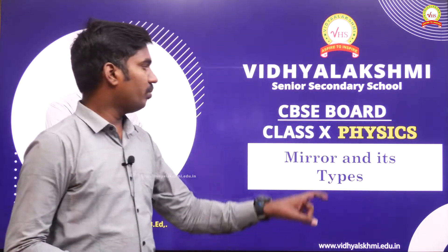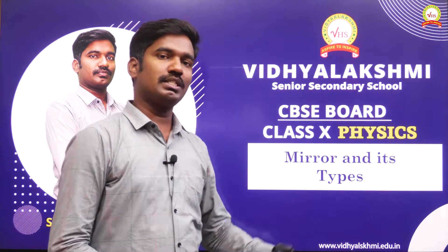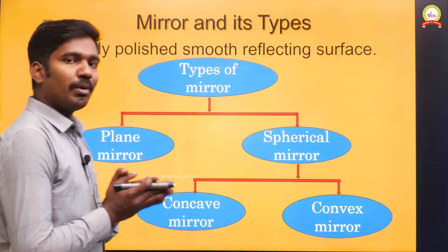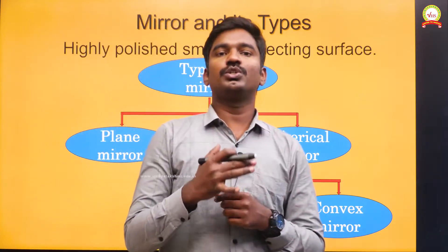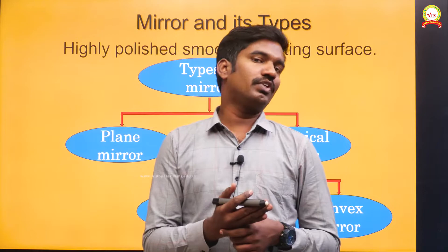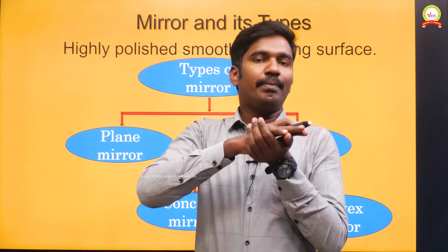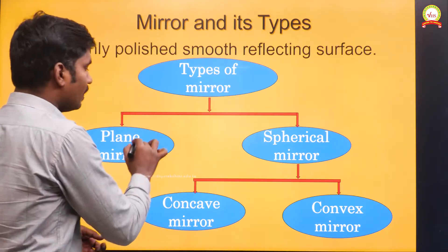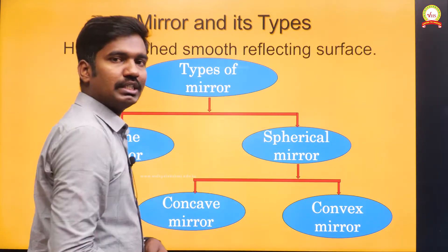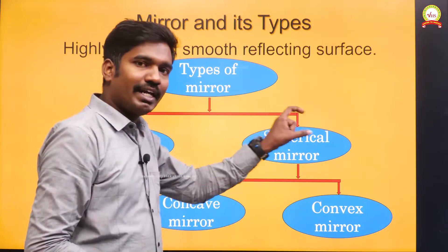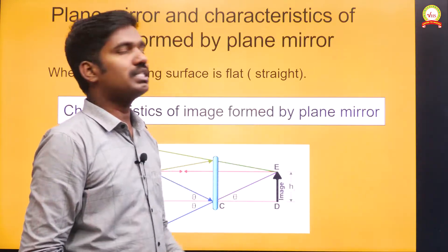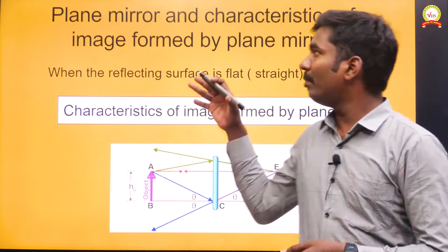Welcome to our YouTube channel. Today we are going to discuss the topic of mirrors and their types. First, what is the meaning of the word mirror? It is a highly polished, smooth reflecting surface. We are dividing mirrors into two parts: one is a plane mirror and another is the spherical mirror. The spherical mirror is further divided into two parts: one is a concave mirror and another is a convex mirror.